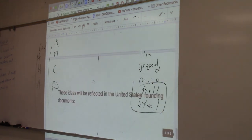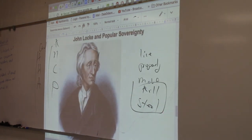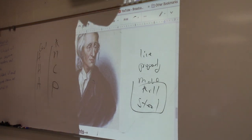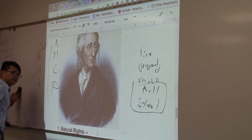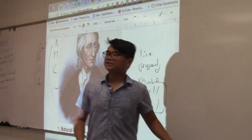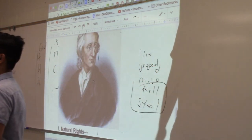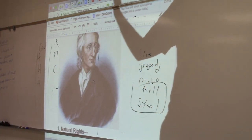Next philosopher: John Locke. John Locke also believed in the social contract theory, but he's different from Thomas Hobbes in that he's not so pessimistic.